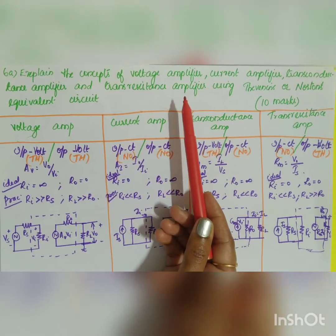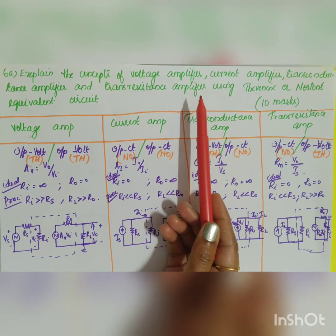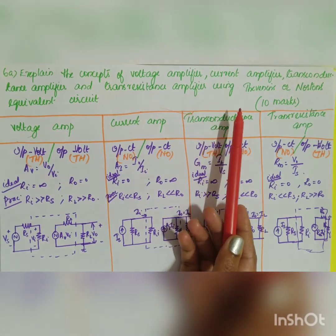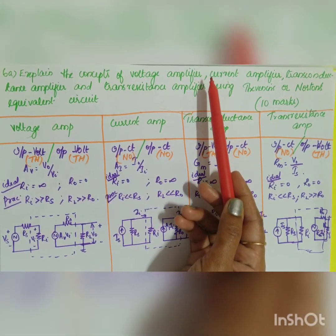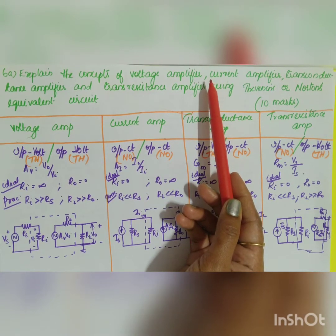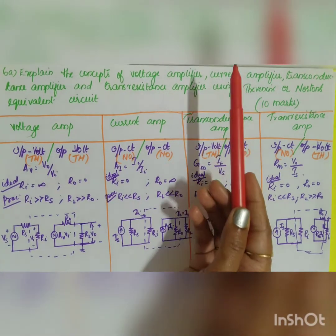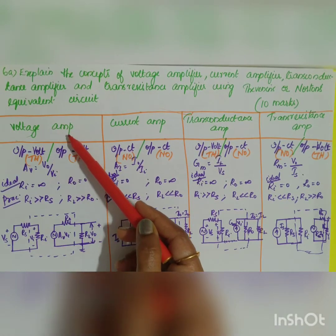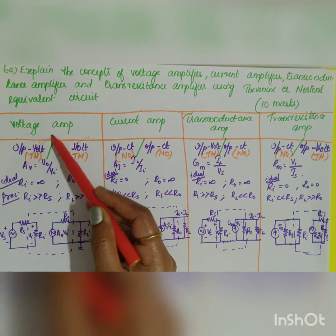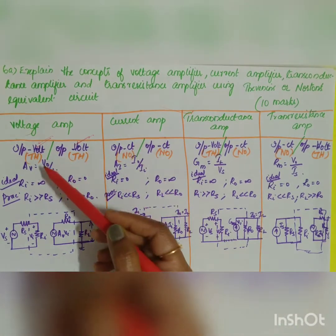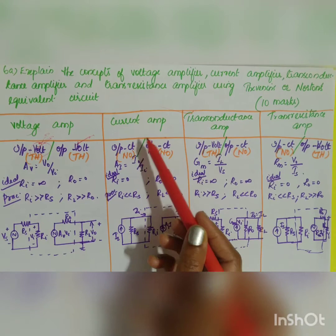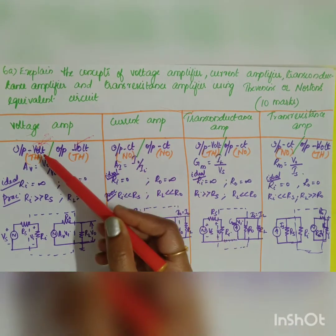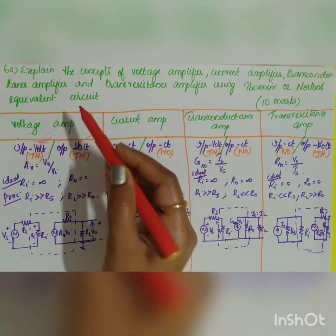The question asks to explain the concepts of voltage amplifier, current amplifier, transconductance amplifier, and transresistance amplifier using Thevenin's or Norton's equivalent circuits. These four types of amplifier categorization are done based on four parameters: input voltage, input current, output voltage, and output current. For the voltage amplifier, both input and output are voltage. If voltage is the parameter, you use Thevenin's equivalent circuit; if current is the parameter, you use Norton's equivalent circuit.